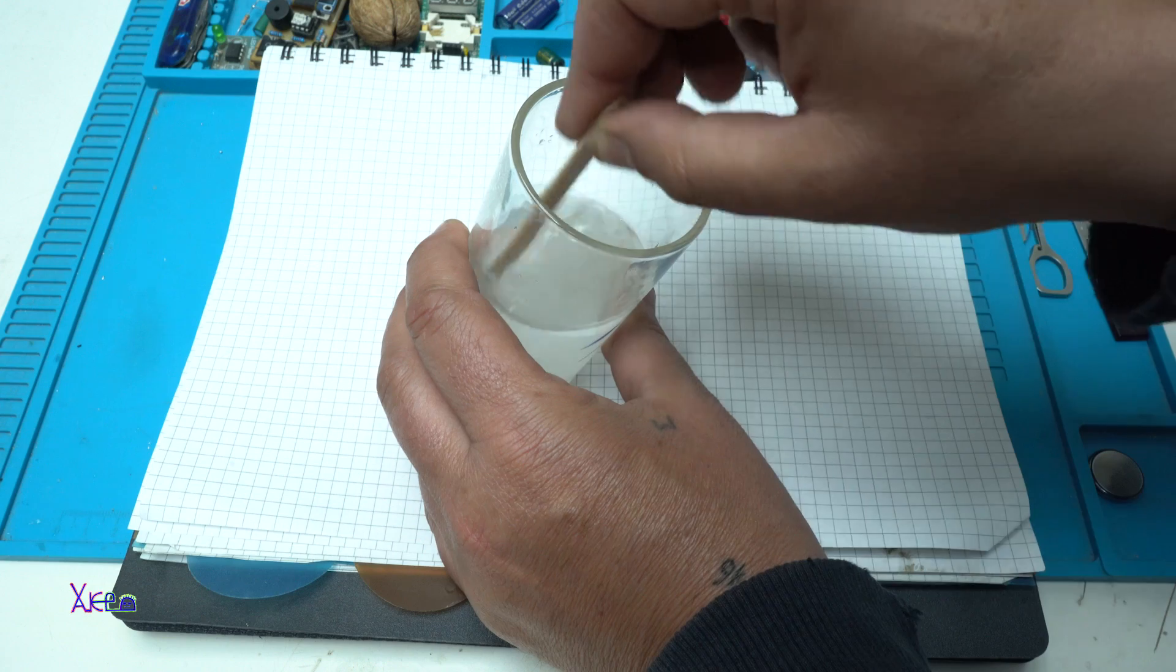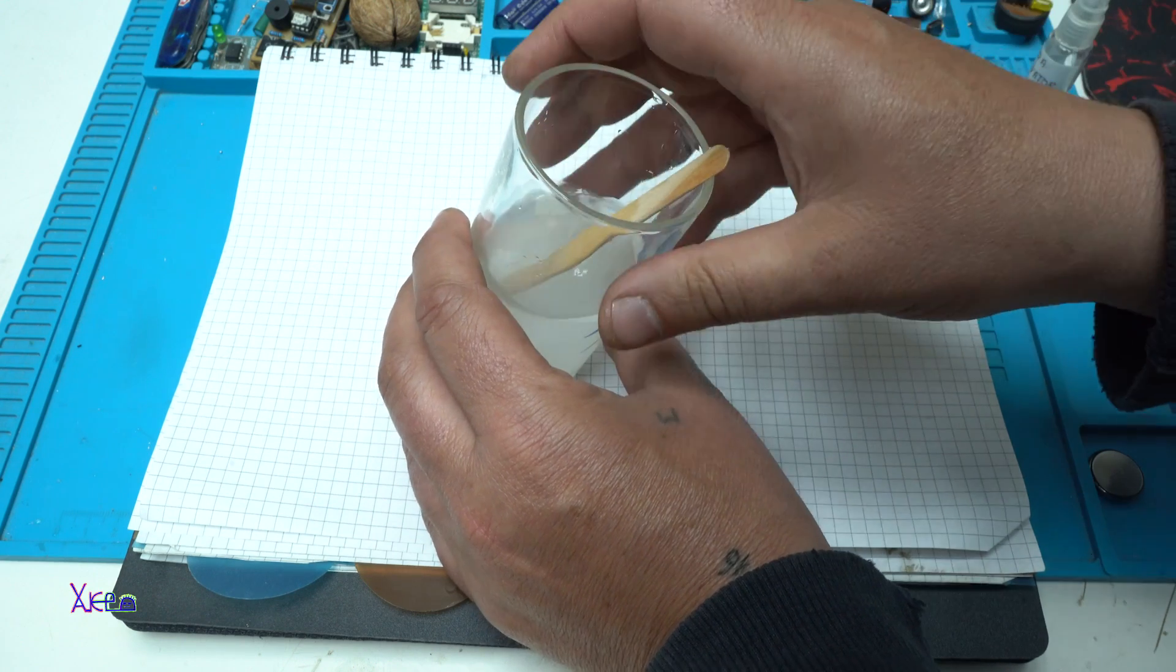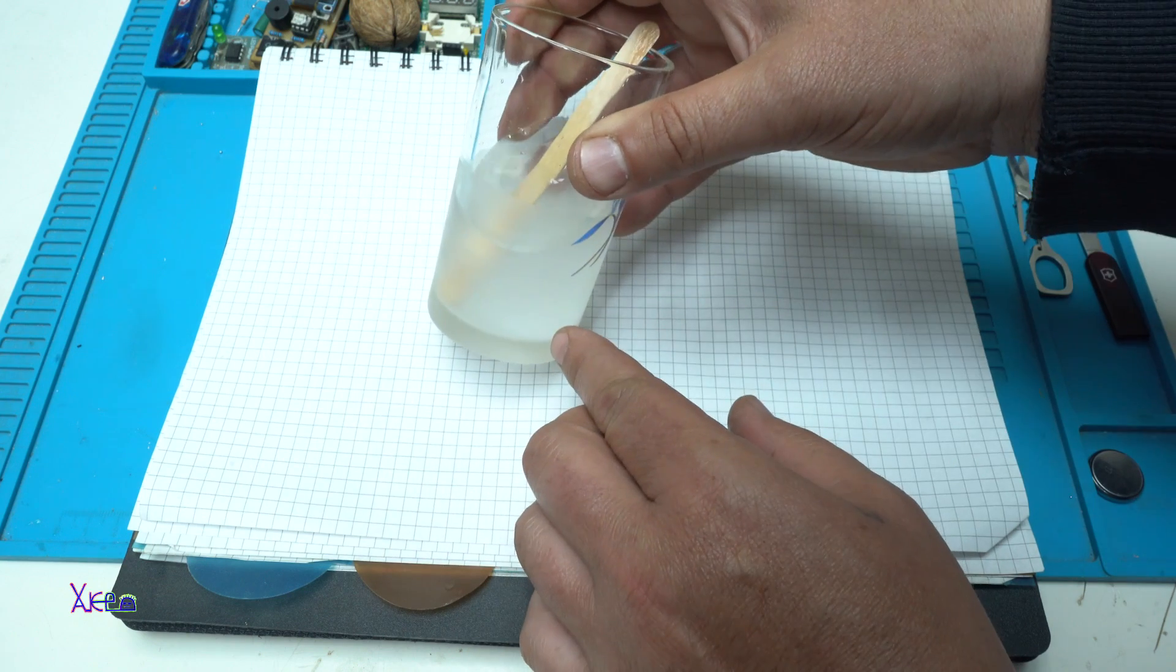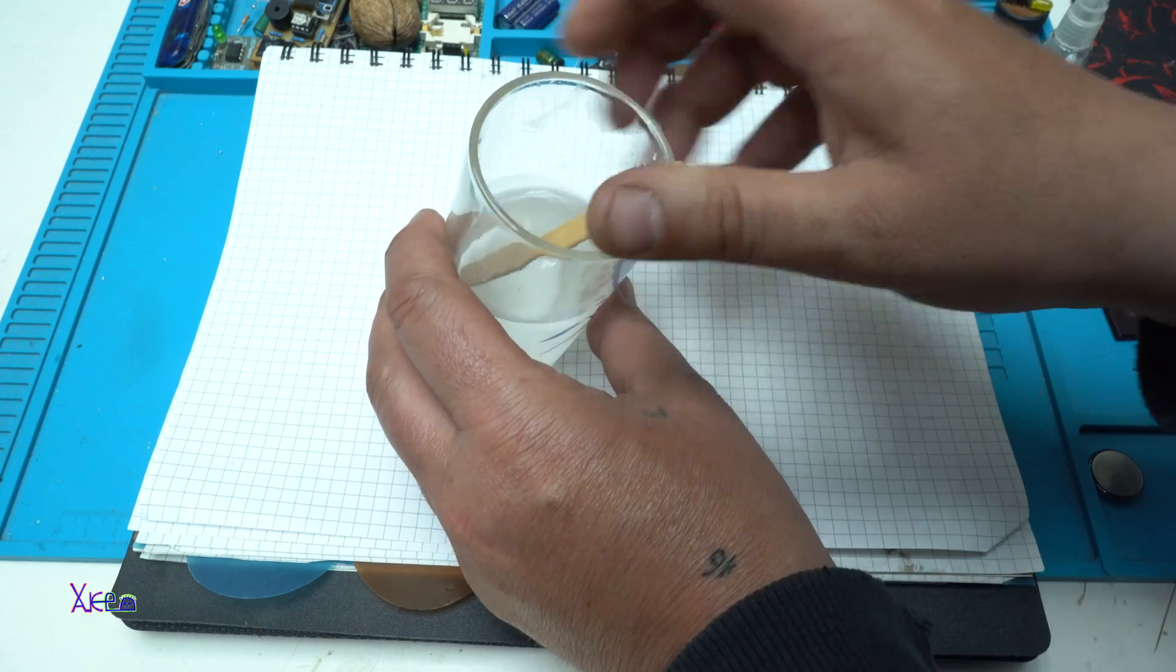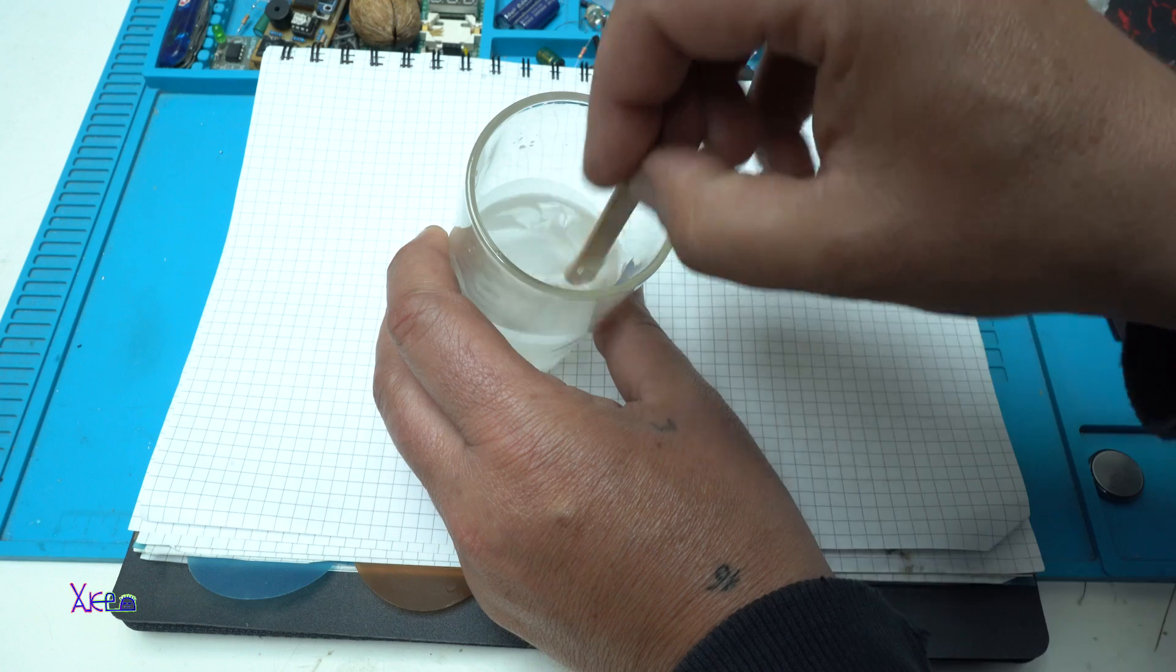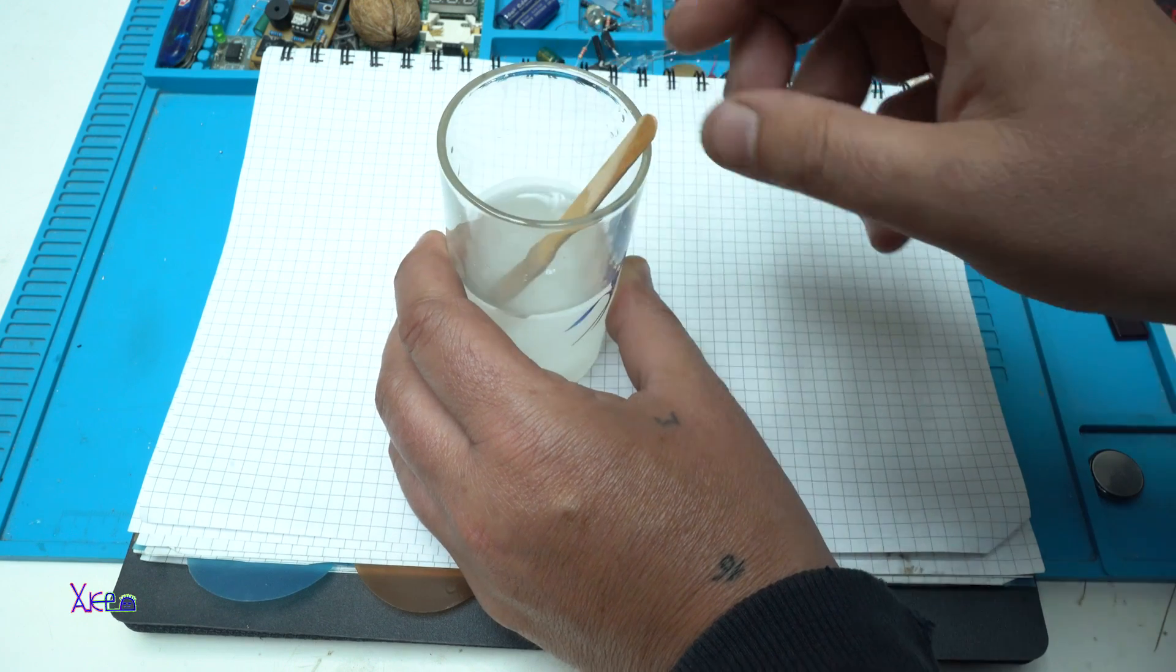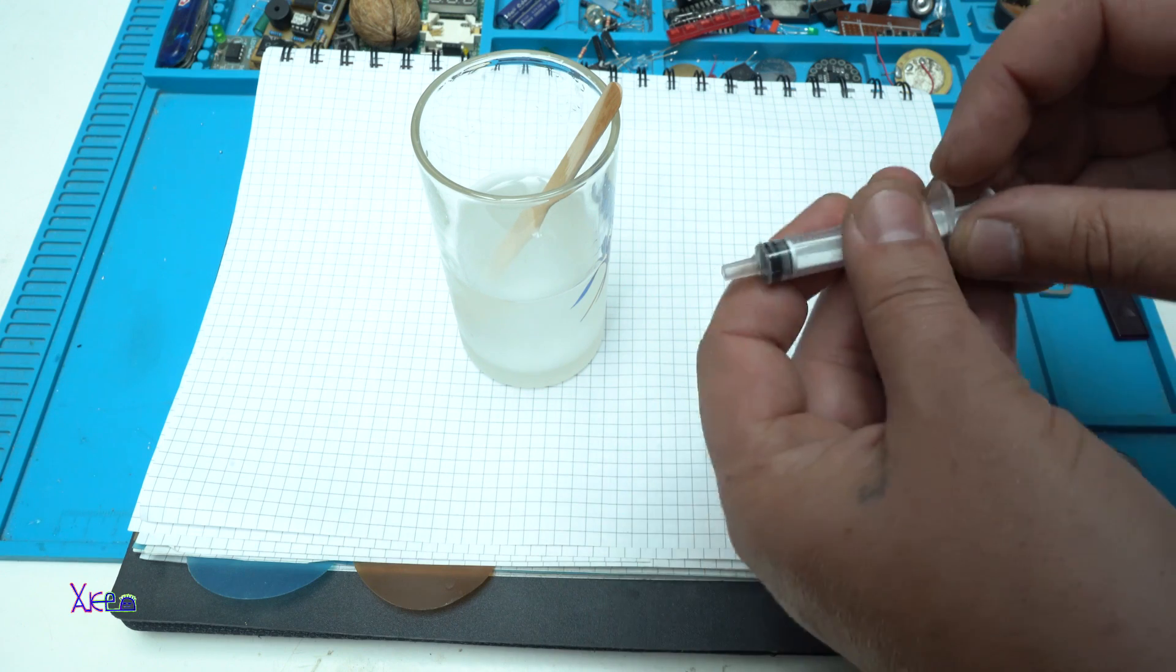After a couple of minutes of mixing the water with the baking soda, if you see the baking soda at the bottom of the glass, that is not a problem. That means that the liquid is okay. Now take your syringe.